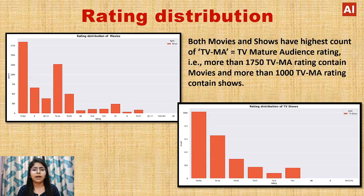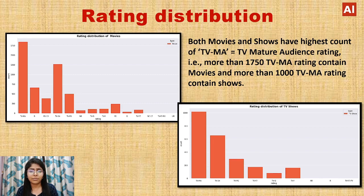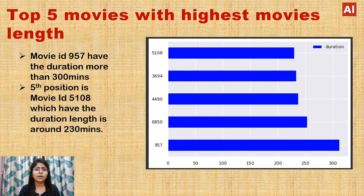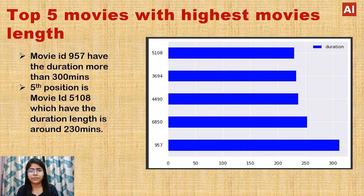Looking at the rating distribution, both movies and shows have the highest count of TV-MA, which stands for TV Mature Audience. There are more than 1750 movies and more than 1000 shows with a TV-MA rating. Looking at the top 5 movies by length, movie ID 957 has a duration of more than 300 minutes, and at fifth position, movie ID 5108 has a duration of around 230 minutes.